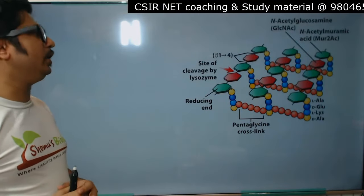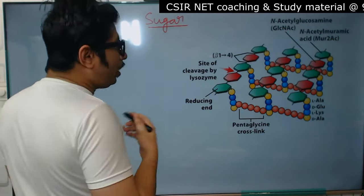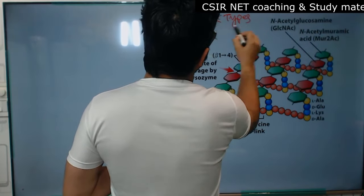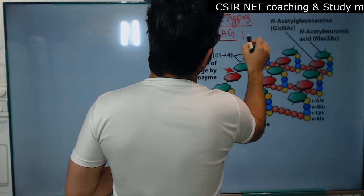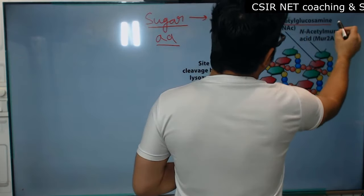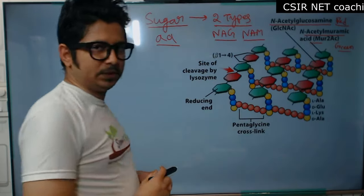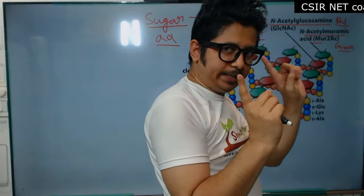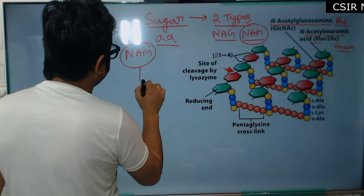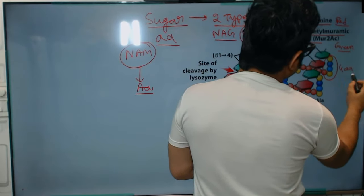Here you can see how this peptidoglycan looks like. The peptidoglycan is made with sugar as a component and along with sugar we have amino acids. There are two types of sugar present: NAG — N-acetyl glucosamine — and NAM — N-acetyl muramic acid. N-acetyl glucosamine is shown in red color and N-acetyl muramic acid in green color. These two types of sugar are attached together, and N-acetyl muramic acid is also connected with amino acids.